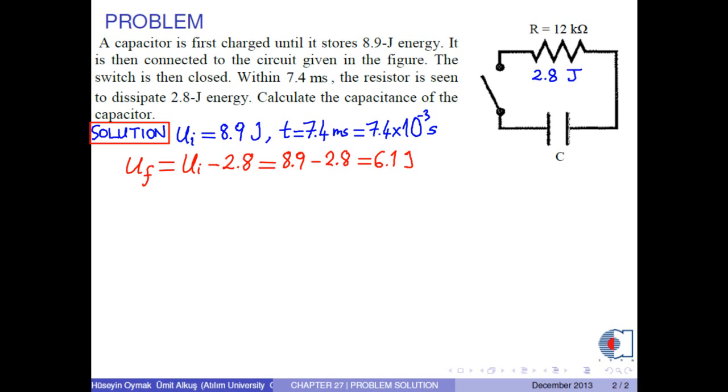Energy stored on the capacitor is calculated as 1 over 2 times C times V squared, where V is the voltage of the capacitor. Another formula is Q squared over 2 times C, where Q is the charge stored in the capacitor. For convenience, we use the formula Q squared over 2C.